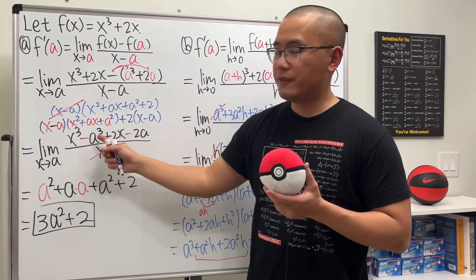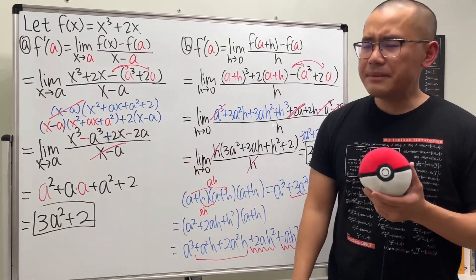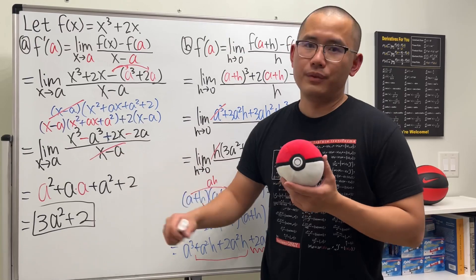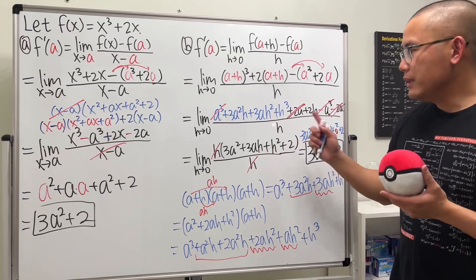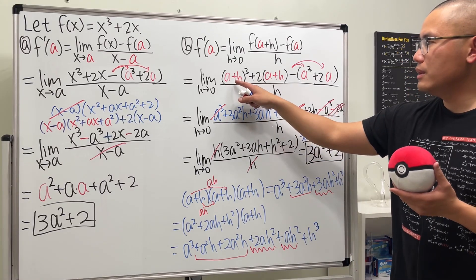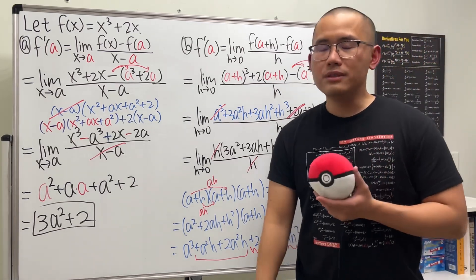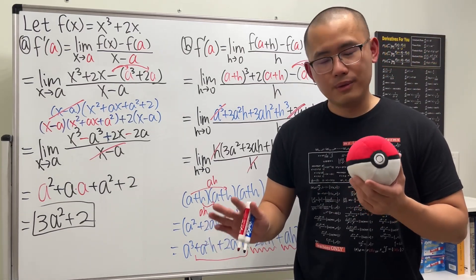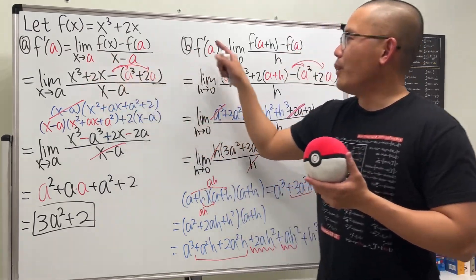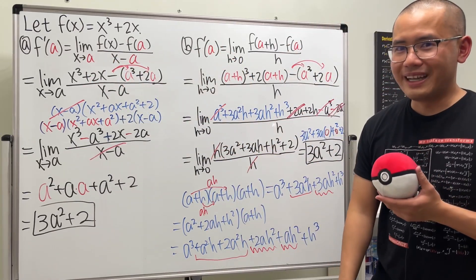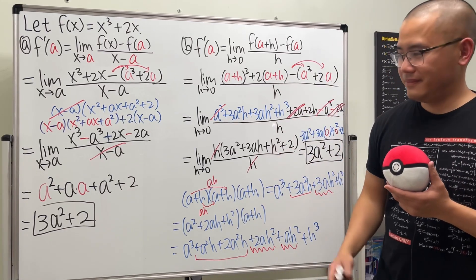So as I told you, Version 1 can be harder to factor — if you don't remember how to factor a difference of two cubes, it can be impossible, and sometimes you need long division. Version 2 requires expanding powers. Let me know your preference — Part A or Part B — which version do you like? If you need more help, check out my other videos. I have a lot more Calc 1 tutorials. That's it for now!